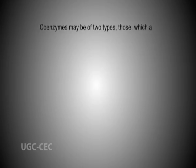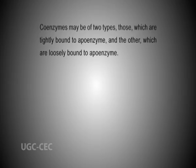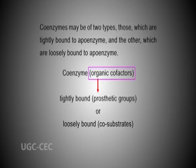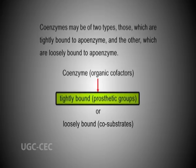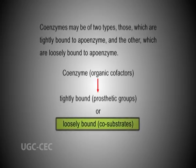Coenzymes may be of two types: those which are tightly bound to apoenzymes, and those which are loosely bound to apoenzymes. So coenzymes, which are organic cofactors, are of two types: tightly bound prosthetic groups or loosely bound co-substrates. Prosthetic groups are those tightly bound coenzymes, while co-substrates refer to loosely bound coenzymes that are released in the same way as substrates and products. Loosely bound coenzymes differ from substrates in that different enzymes may use the same coenzyme to bring about proper enzyme activity. Through further research in coenzyme activities and its binding effect on the enzyme, more can be revealed about how the enzyme changes conformationally and functionally.